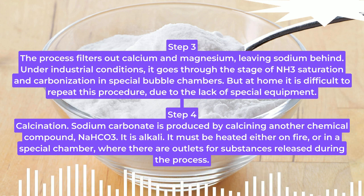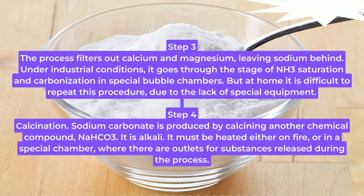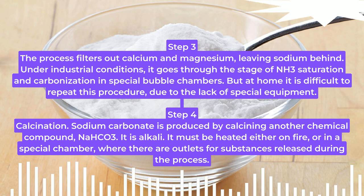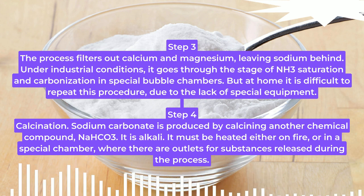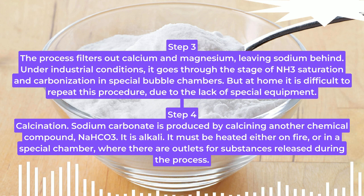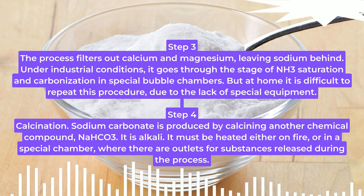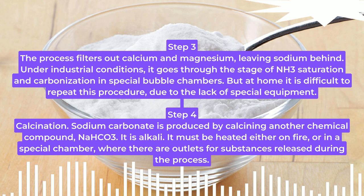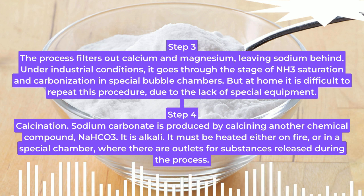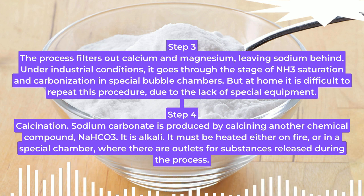Step 4. Calcination. Sodium carbonate is produced by calcining another chemical compound, NaHCO3. It is alkali. It must be heated either on fire or in a special chamber, where there are outlets for substances released during the process.